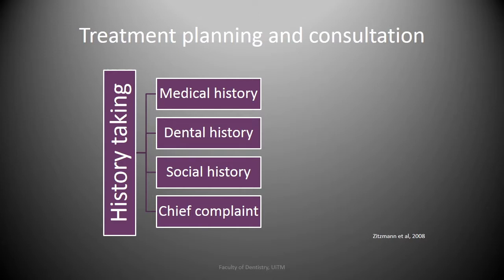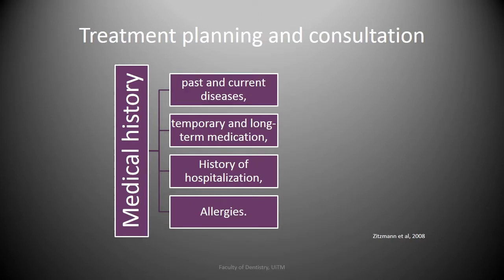During the first visit, possible implant contraindications should be ruled out. This makes it important to obtain proper medical, dental, and social history and chief complaint, followed by a systematic clinical examination. A thorough medical history by means of a questionnaire or interview should be obtained, including past and current diseases, temporary or long-term medications, history of hospitalizations, and allergies to medications or types of food.